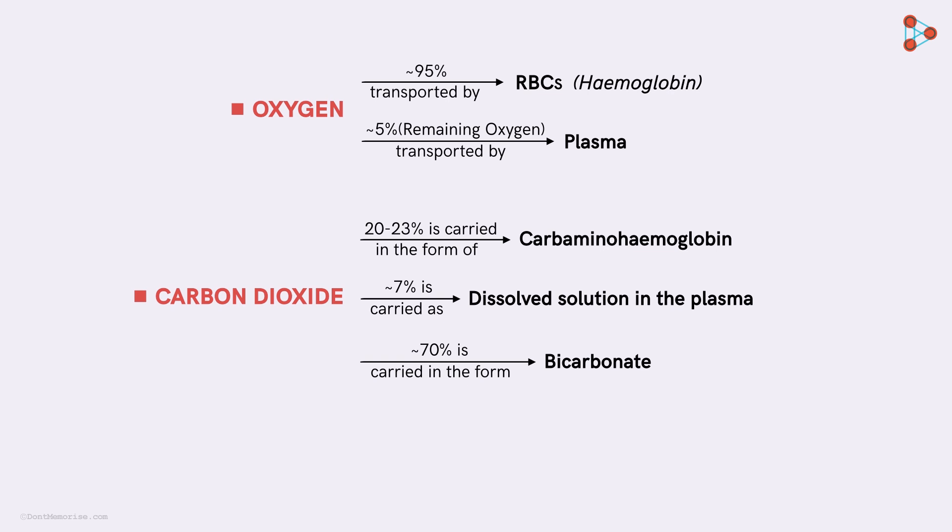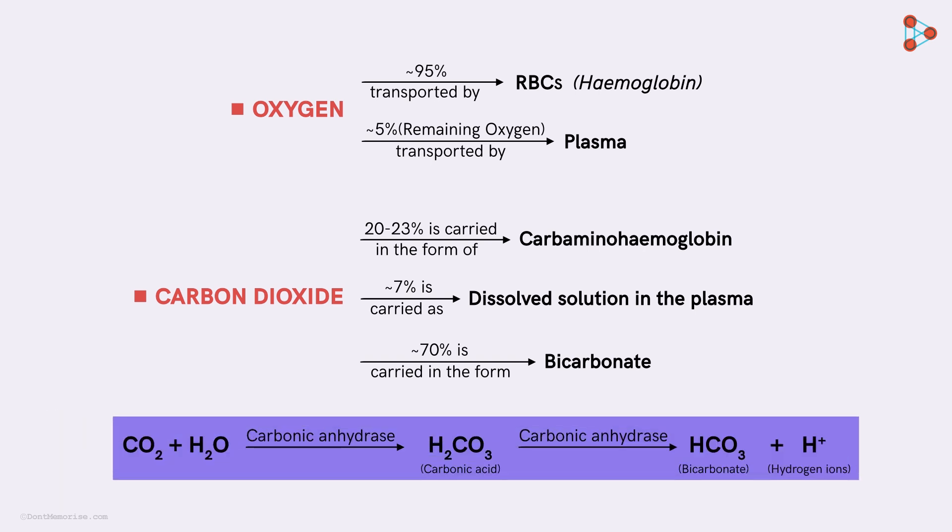The conversion of carbon dioxide into bicarbonates is carried out by the enzyme carbonic anhydrase. This enzyme converts carbon dioxide and water to give bicarbonates and hydrogen ions. And where does this happen? The conversion and the transport are all carried out in the RBC itself. That's right!